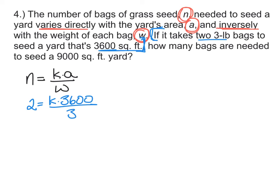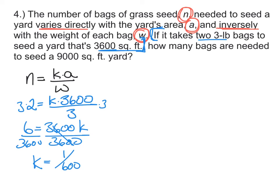With all these values in the equation, it looks like we have to solve for K. So I'm going to multiply both sides by three. And then divide by the 3,600. So the constant is going to be one over 600. That means we can rewrite our function as N is equal to one over 600 times the area divided by the weight of each bag.